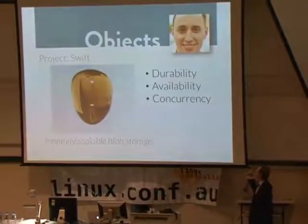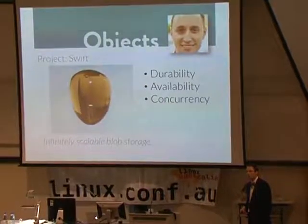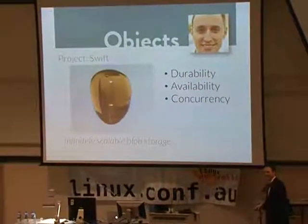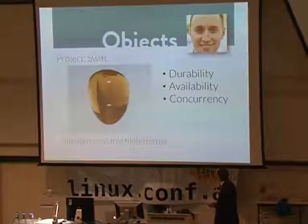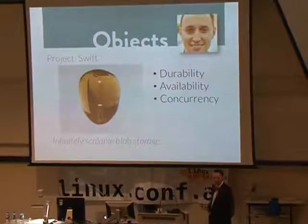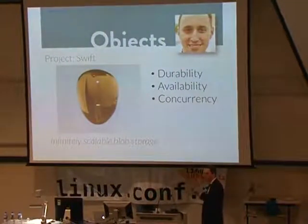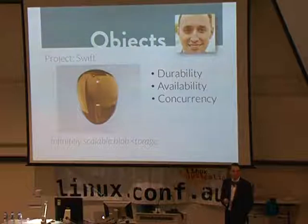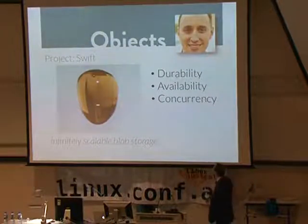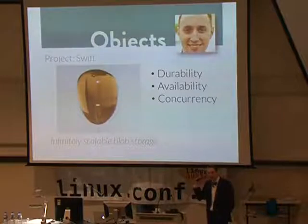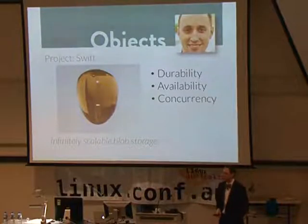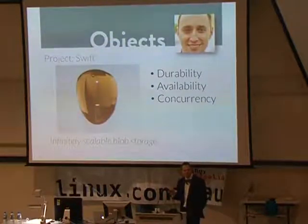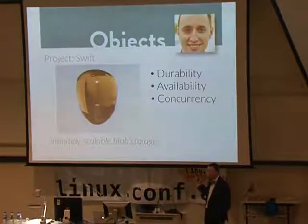Object storage — that's John Dickinson's project, Swift. Scale-out storage: giant, billions of photos of cats, no POSIX. Very high level: durable, available, lots of simultaneous users, lots of data, no memory mapping. If you're in the HPC community, it's close to what you want but not necessarily. We used this a lot at NASA — this is where all those photos of Mars went.